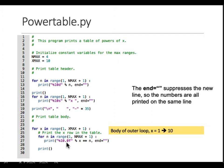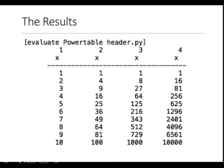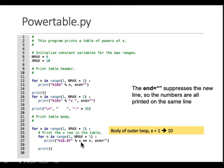The inner loop continues: n is 2, x is still 1, so 1 to the power of 2 is printed. Then n is 3, and 1 to the power of 3 is printed. Finally n is 4 — remember n_max plus 1 is 5, so the range goes up to 4 — and 1 to the power of 4 is printed.